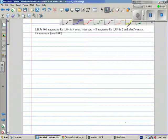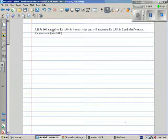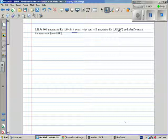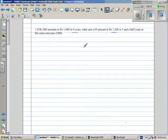So let's read the first question. Okay, what does it say? If 900 rupees amounts to 1,044 in 4 years, what sum will amount to 1,368 in 3 and a half years at the same rate? Okay, so there are two situations here. Let's first look at the first situation.